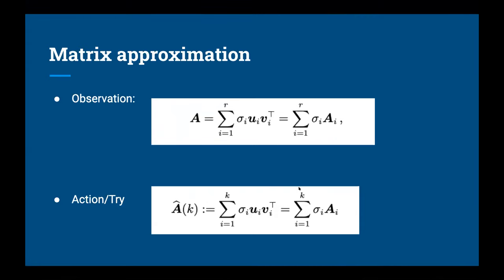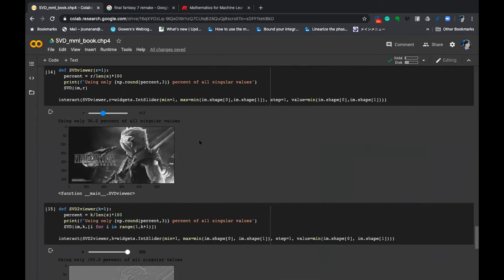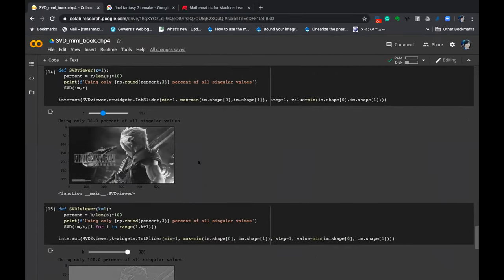We have 325 rank-1 terms. What if we use only a few? That's matrix approximation. If we use 20 of those, which is about 6.15% of all singular values, we get a rough estimate of the photo. The result is still rough, but recognizable. This is the point of matrix approximation — there's some error, but it's optimized: writing A as a sum of rank-1 matrices A_i and summing only K of them.